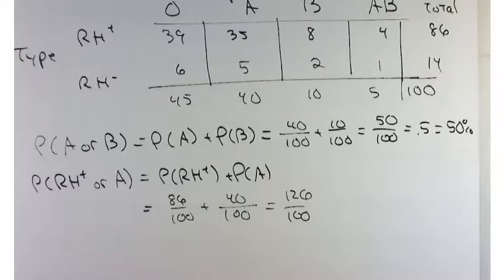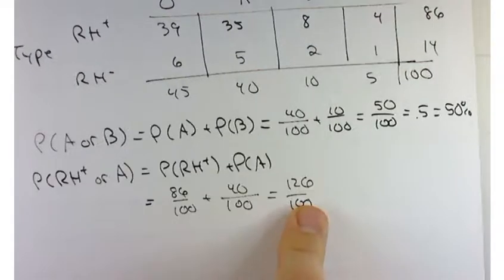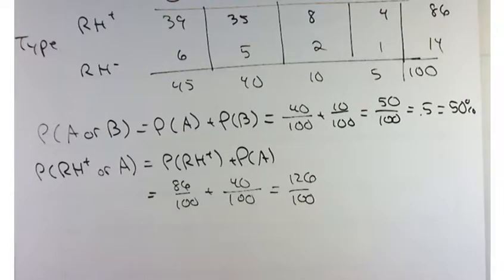Yeah, well, you got to the problem. There was a double counting here. But what's really wrong with this is that it's greater than 1. You can't have a probability greater than 1.